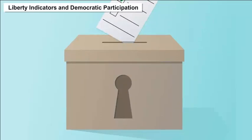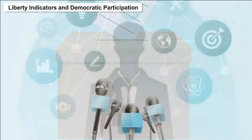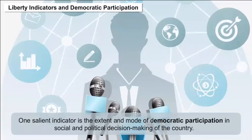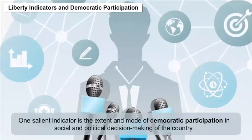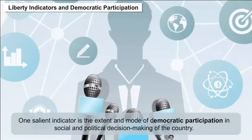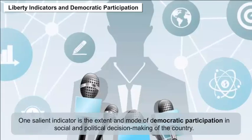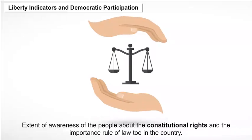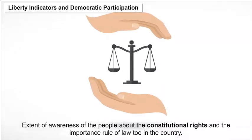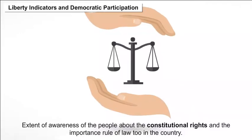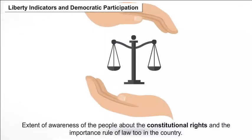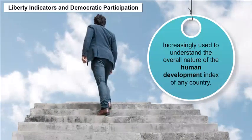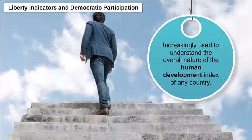Liberty Indicators and Democratic Participation: In order to measure human development in a country, one salient indicator is the extent and mode of democratic participation in social and political decision-making. This can also be understood as the extent of awareness of the people about constitutional rights and the importance of the rule of law. These factors are increasingly used in modern times to understand the overall nature of the Human Development Index of any country.